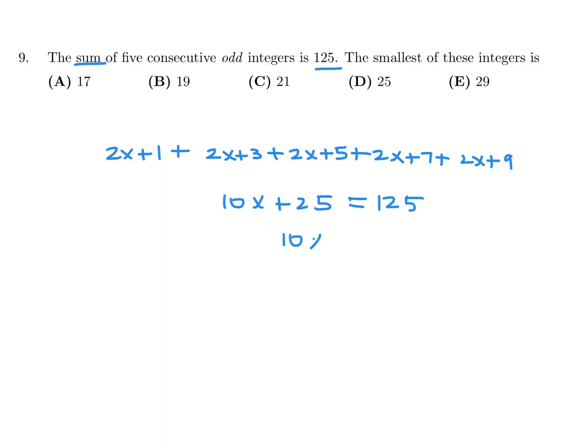So therefore, 10x would be 100, and x would be 10. Now, they don't want 10. Thankfully, 10 is not one of the answers because sometimes it is, and then you choose it and get it wrong. But they want the smallest. The smallest was this guy. So if x is 10, 2x plus 1 would be 21. And therefore, number 9, the answer is C.